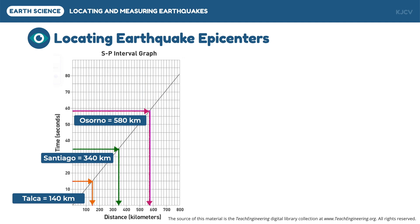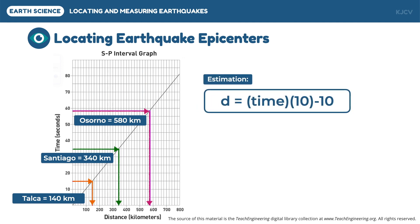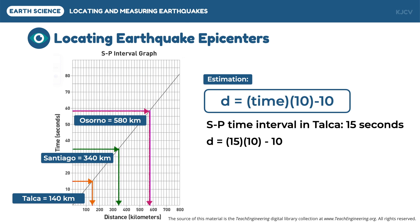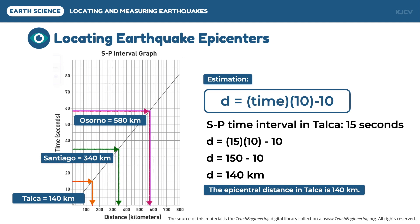We can also use the equation of the diagonal line in the graph to get the epicentral distance from the S-P time interval. This line has the equation D = (time × 10) − 10. For Talca, with an S-P time interval of 15 seconds: D = (15 × 10) − 10 = 150 − 10 = 140 kilometers epicentral distance.